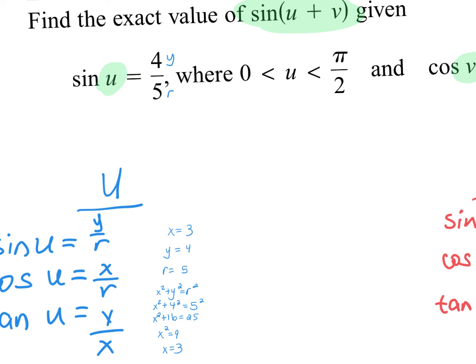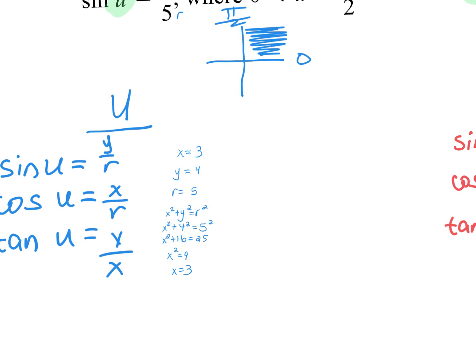Now I look up here. They told me that sine of U is 4 over 5, where U is between 0 and pi over 2, which is up here. So if it was in between that, it means it's in the first quadrant. What do you know about the X value, the Y value, and the R value? They're all positive. So X is 3, Y is 4, R is 5.